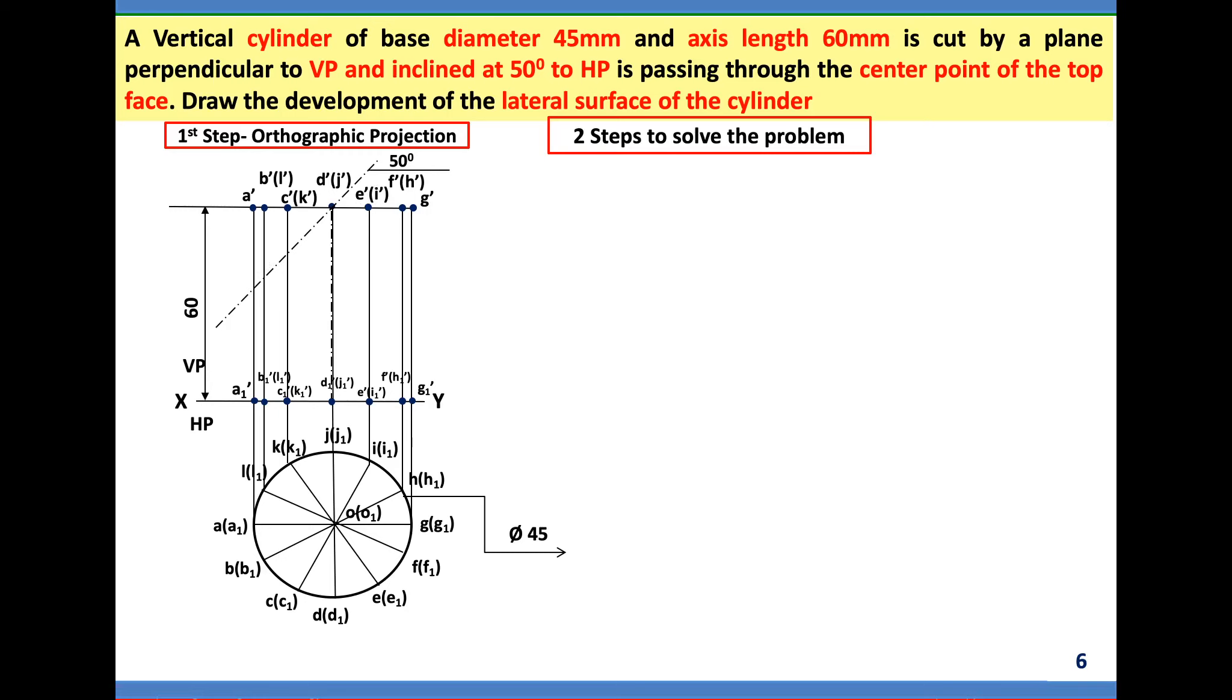Now to mark the cutting points. It has cut A dash, A1 dash at one dash. Next, I'll drop it down and come here in the top view which is also one. Next line is having two lines, B and L, so let me mark this as two dash. I'll bring it down which is at the top view B, which is two.